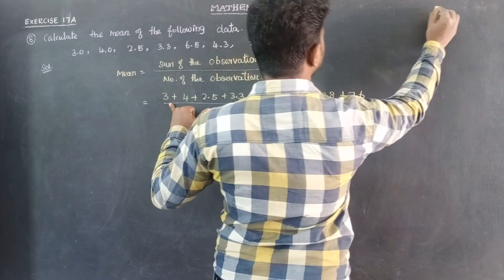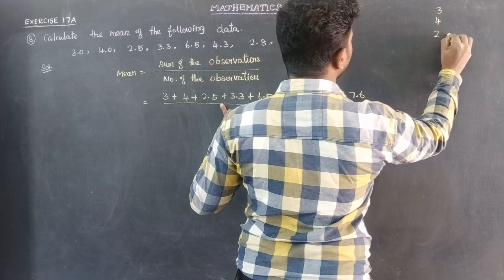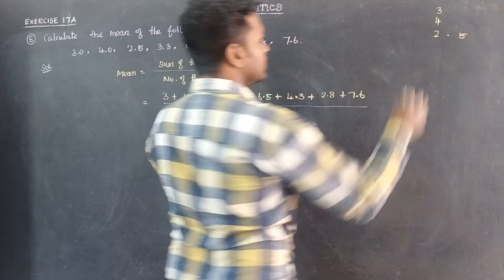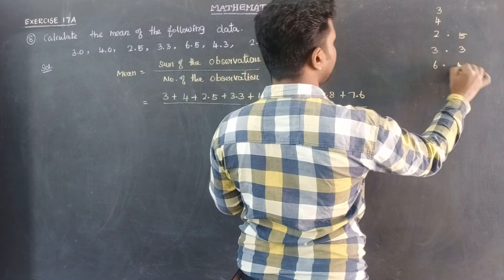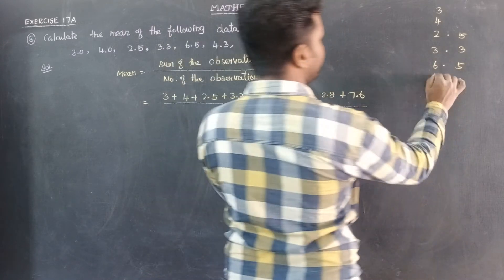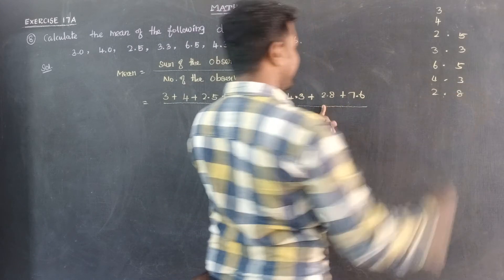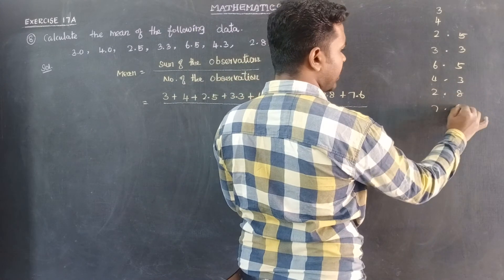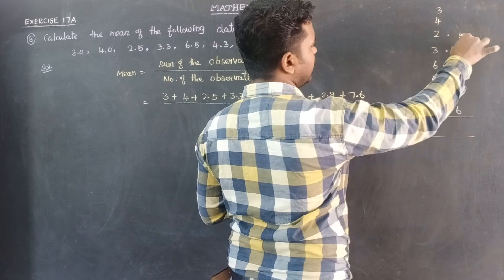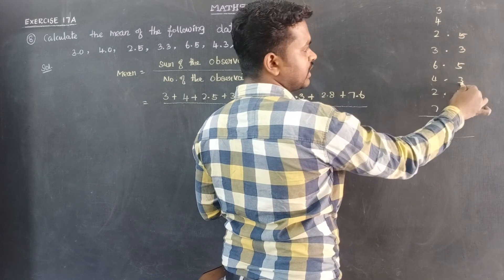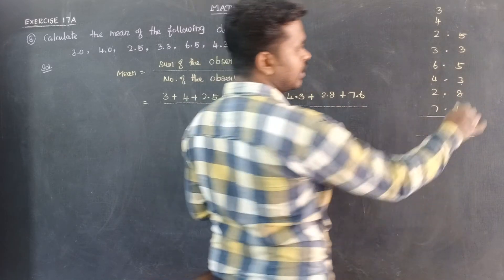Numerator is sum. So add number 3 plus 4, next one 2.5, 3.3, 6.5, 4.3, 2.8 and 7.6. So first number 5 plus 3, 8. 8 plus 5, 13. 13 plus 3, 16. 16 plus 8, 24.